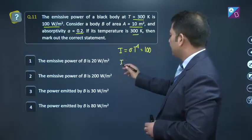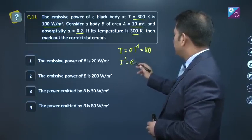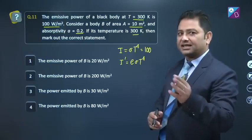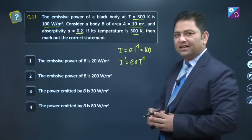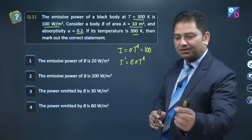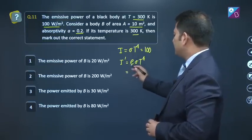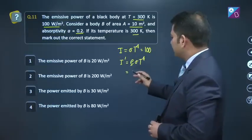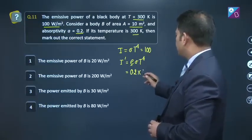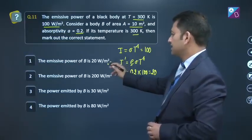Power emitted and emissive power in radiation theory are different things. For that body, the emissive power will be emissivity multiplied by sigma multiplied by T raised to the power 4. Obviously, that is a grey body, because absorptivity is 0.2. If it was perfectly black body, absorptivity would have been 1. Emissivity and absorptivity have the same value. So this is 0.2, sigma T raised to the power 4, that is 20 Watt per meter square.